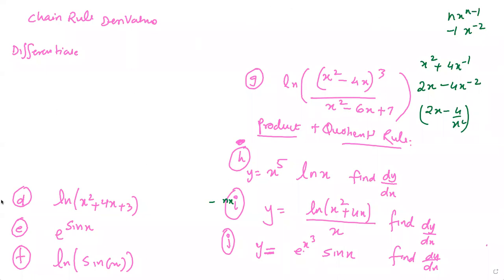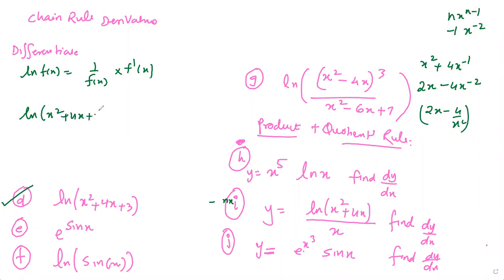Coming to part d: the derivative of ln(f(x)) is 1 over f(x) times f'(x). Applying the same logic to ln(x² + 4x + 3), differentiating gives 1 over (x² + 4x + 3) times the derivative of x² + 4x + 3, which is 2x + 4.